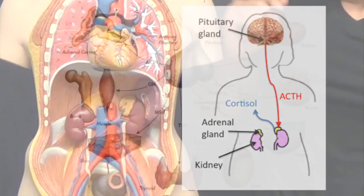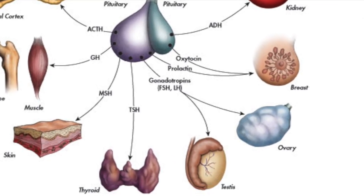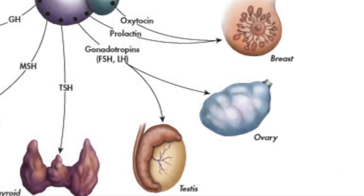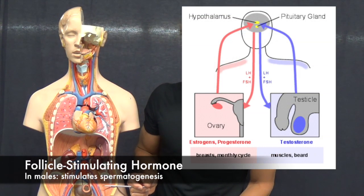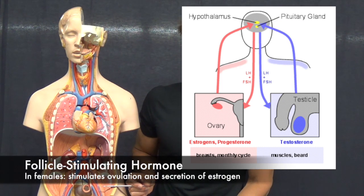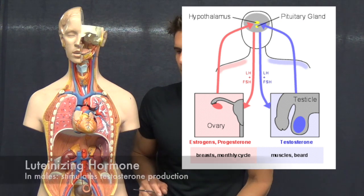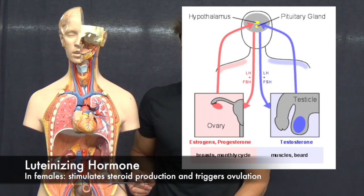Follicle stimulating hormone and luteinizing hormone are collectively known as gonadotropes. Follicle stimulating hormone in men stimulates sperm production by the testes, and in women stimulates the production of oocytes and secretion of estrogen by the ovaries. Luteinizing hormone in men stimulates the secretion of testosterone by the testes, and in women stimulates the secretion of estrogens.